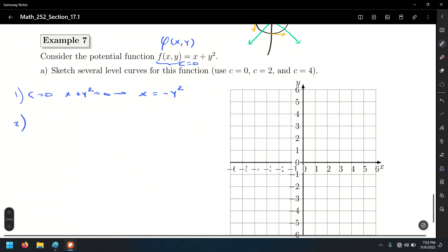So number two, c equals to 2. That makes x plus y squared equals to 2, and x equals negative y squared plus 2. And number three, for c equals to 4, that's x plus y squared equals to 4, and that's x equals to negative y squared plus 4.